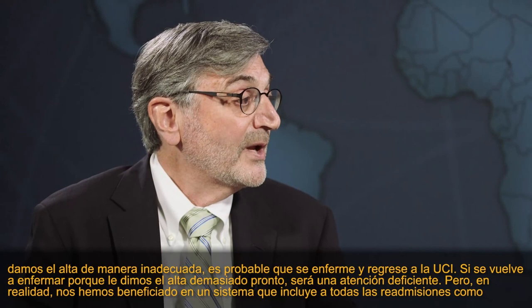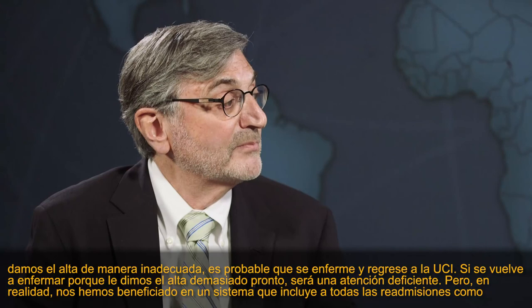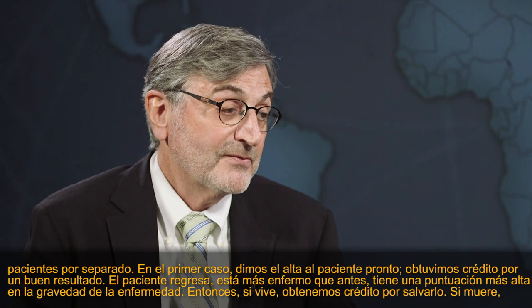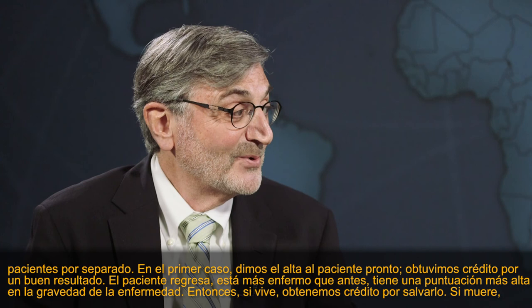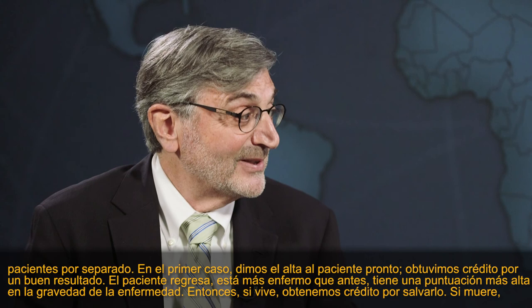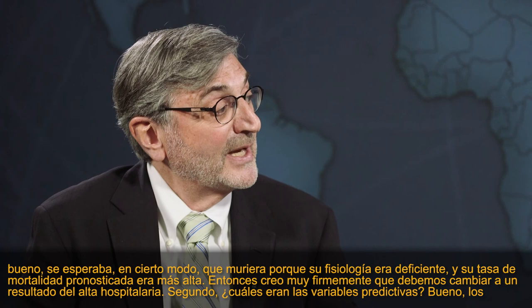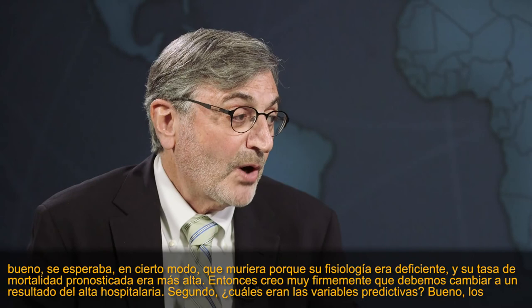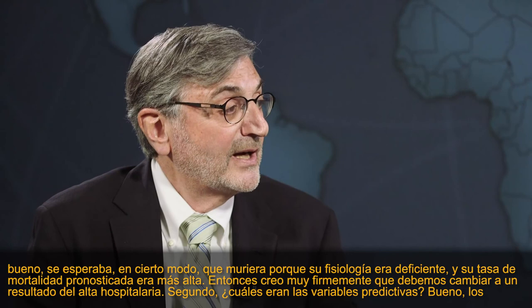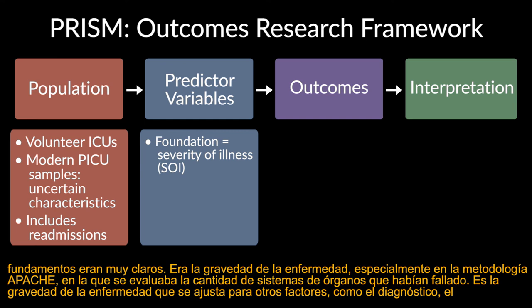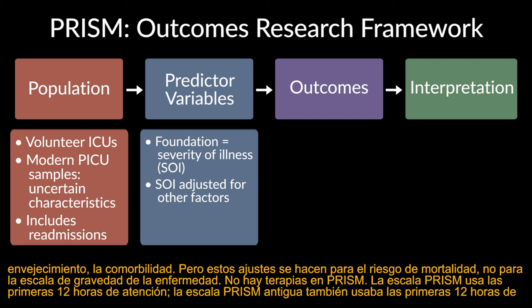In a system that includes all readmissions as separate patients, we've actually advantaged ourselves. In the first case, we discharged the patient early and got credit for a good outcome. The patient comes back sicker with a higher severity of illness score — if they live, we get credit for saving them; if they die, they were expected to die because their predicted mortality was higher. I believe very strongly that we should transition to a hospital discharge outcome. The foundation of PRISM was severity of illness in the Apache methodology, adjusted for factors such as diagnosis, age, and comorbidity.